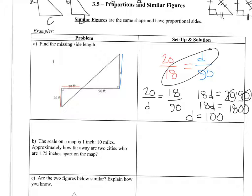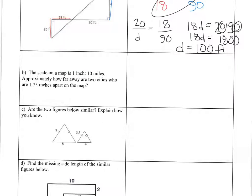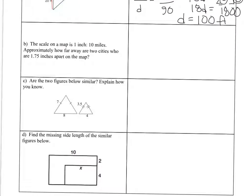And you want to make sure that you put units, so 100 feet. Okay, B, a scale on a map is 1 inch is 10 miles. Approximately how far away are two cities who are 1.75 inches apart on the map?